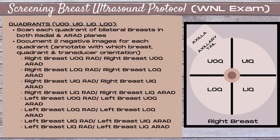You want to position the patient properly to best visualize the breast tissue. I would generally position the patient into a lateral oblique position with a wedge pillow behind their back to scan the outer part of the breasts, and generally a supine position to scan the inner portions of the breast. I would generally do both inner quadrants and then both outer quadrants, or vice versa.